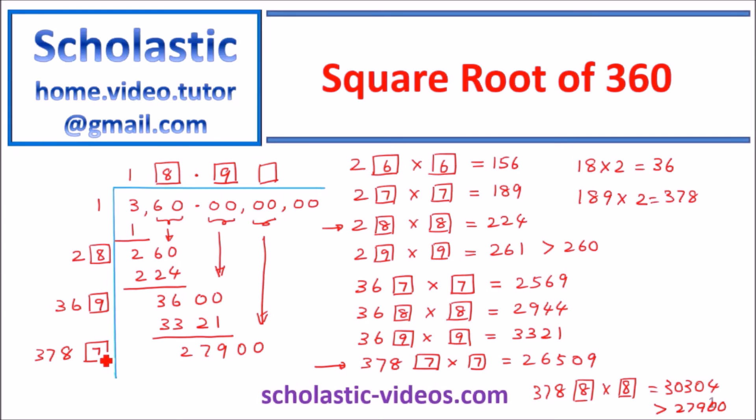So you take the 7 there and put the 7 there, multiply 26509, 26509. So we get a remainder here, that means we can continue further. But if you continue further, the next number will be 3, but I put 4 because if you continue for 4 numbers, which is you get a number greater than 5. So our answer here is 360 square root is equal to 18.97. So if you approximate it to 2 decimal points. Thank you.